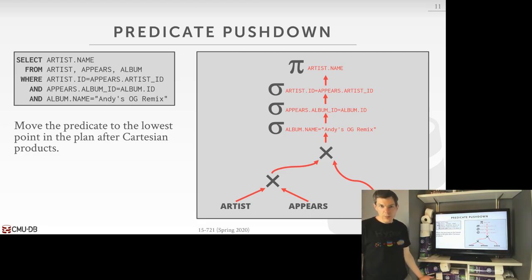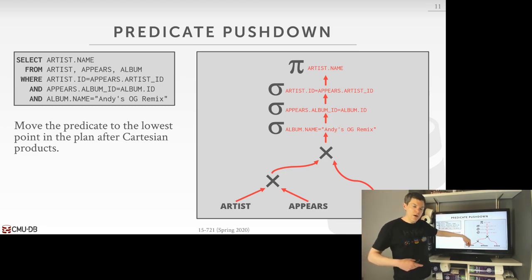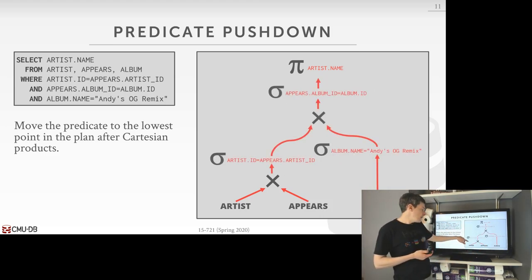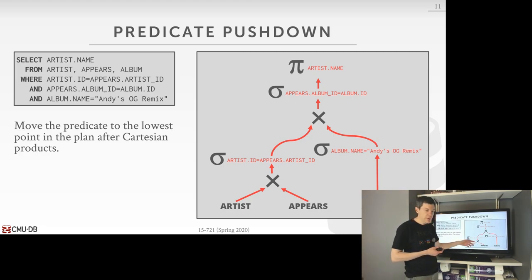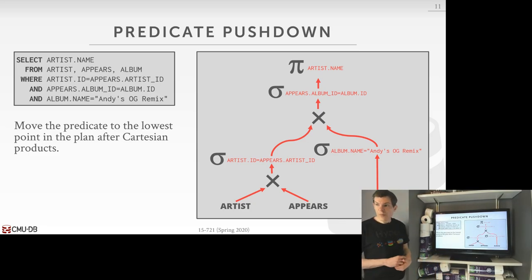Now that we have these individual filters, we can start moving them to different parts of the query plan. This is how classic predicate pushdown works: we move each predicate to the lowest point in the query plan where we have all the information — all the attributes — that we need for that filter. So for the join predicates we apply them after the Cartesian product of those two tables, but for 'album.name equals remix,' we can push that immediately after the scan on the album table, since we have all the information we need.